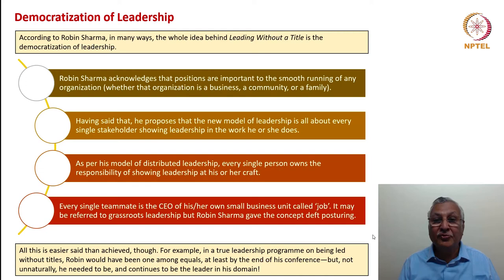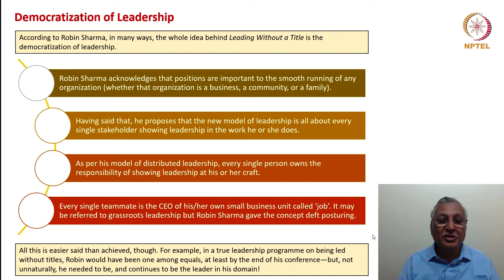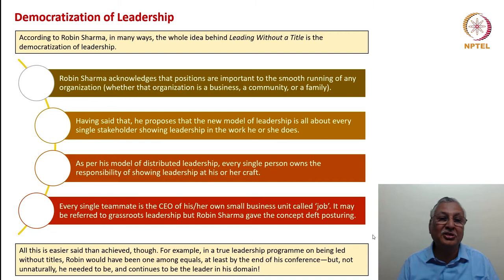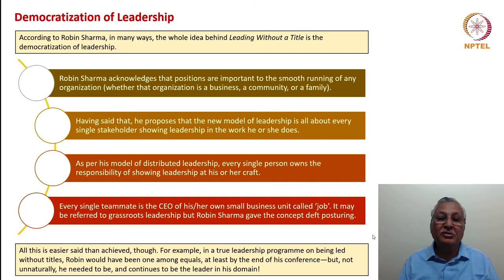You can feel that this is somewhat similar to the concept of grassroots leadership with reference to the medical representative that I discussed in an earlier lecture; Robin Sharma has given deeper posturing to that concept. That said, this concept is pretty difficult to implement in practice. If taken to a logical conclusion in a program having hundreds of executives organized by Robin Sharma, he cannot be the lead — he should be one amongst everybody. But all the people have assembled in such a program essentially to listen to Robin Sharma and get inspired by him. Therefore, leadership and title are somewhat intrinsic to the way organizations have to be structured and the way goals have to be delivered.